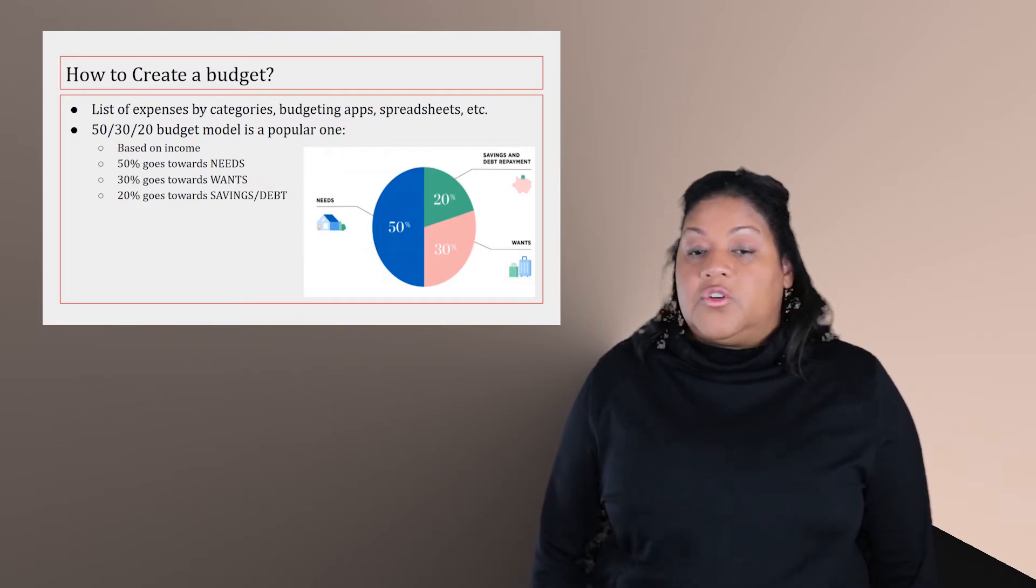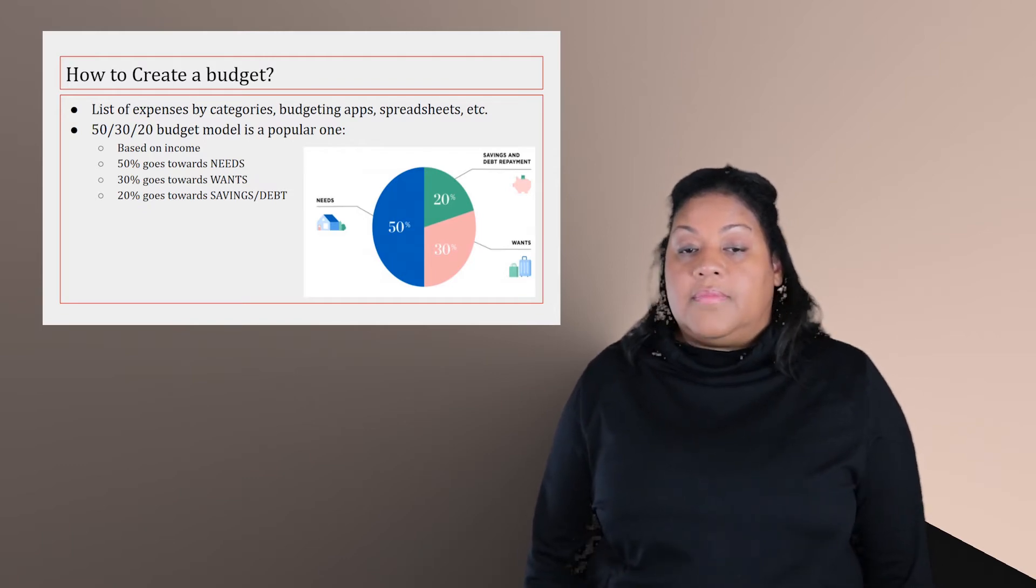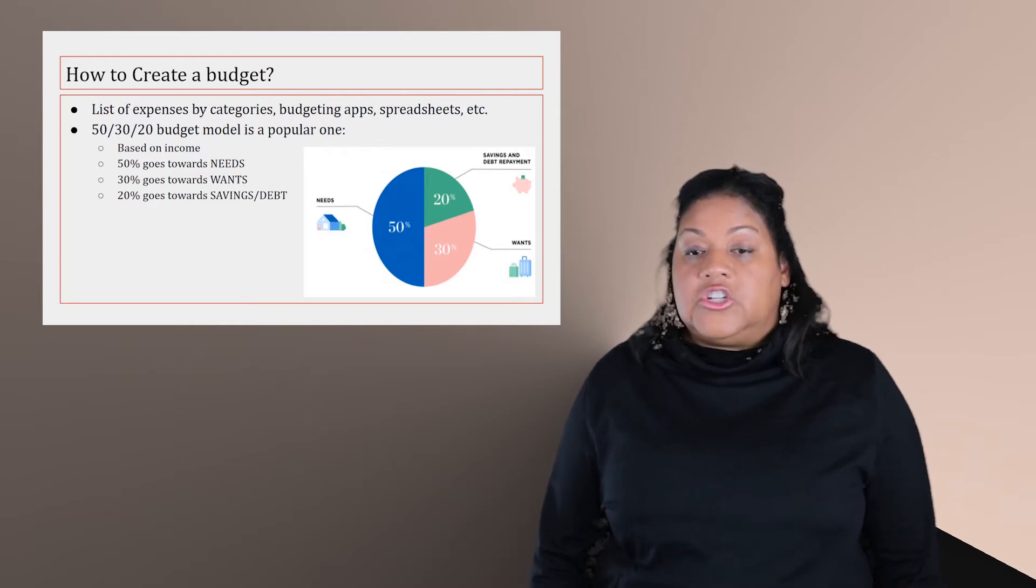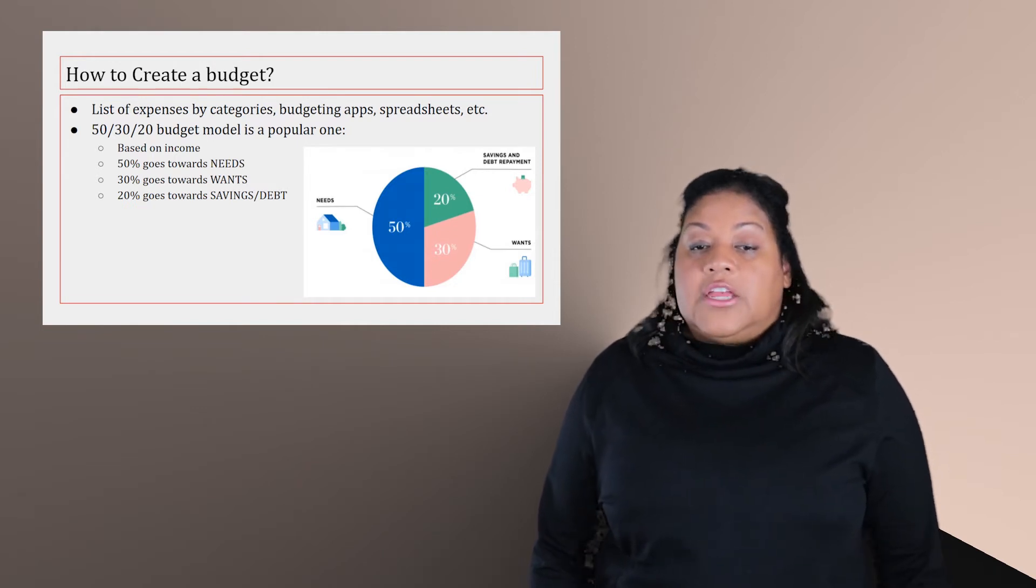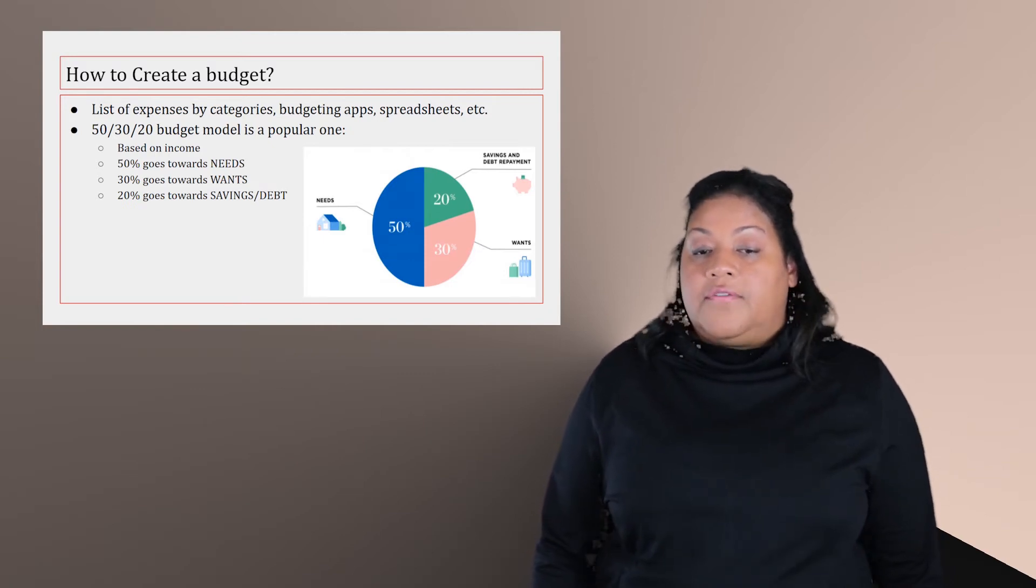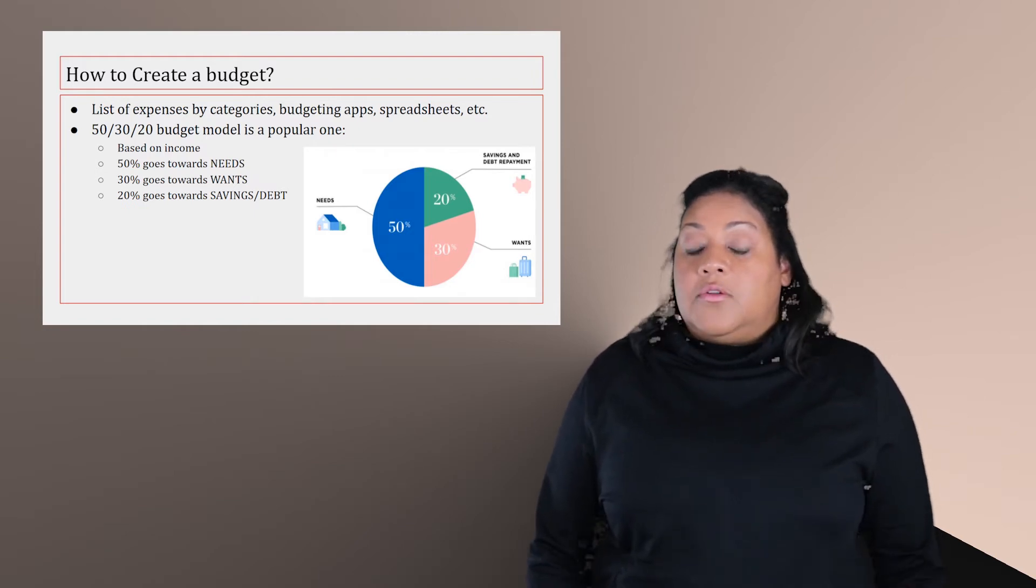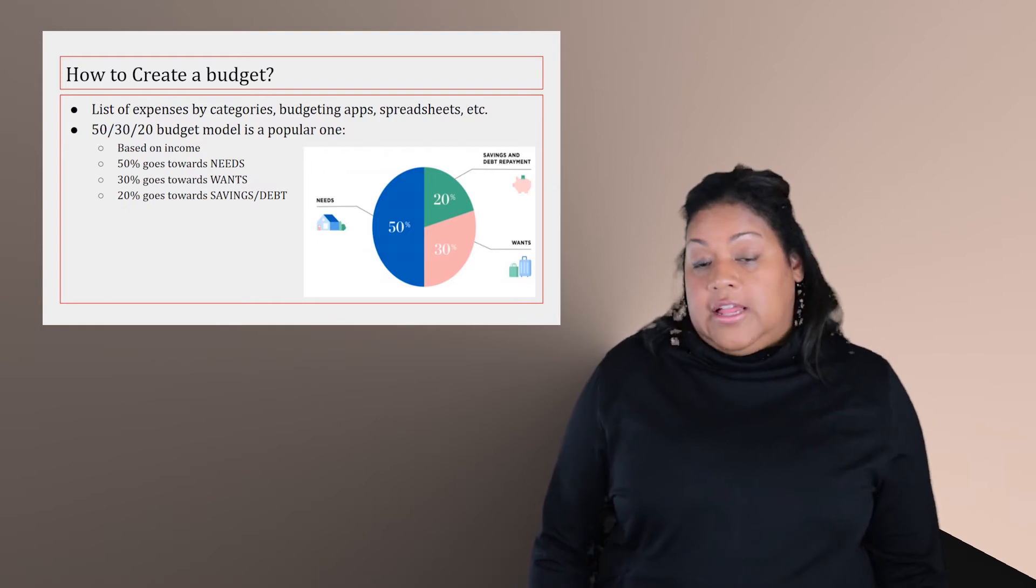That said, the 50-30-20 budget is a popular model based on your income. 50% of your income are your needs. So that was your house, transportation, basic utilities. 30% of your income are your wants. So distinguishing between your needs and wants isn't always easy and can vary from budget to another. Generally, you want to think of those extras that make life a little bit more enjoyable and are fun. So like your monthly subscriptions or traveling. And 20% should go towards savings or paying off your debt. You want to make sure that you save and have a comfortable cushion so that you can pay and support yourself during challenging times.